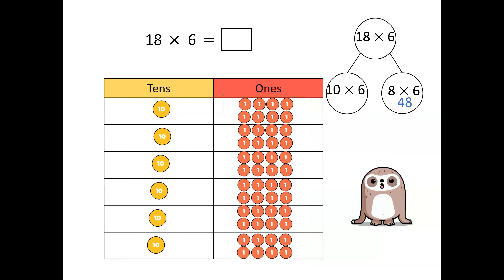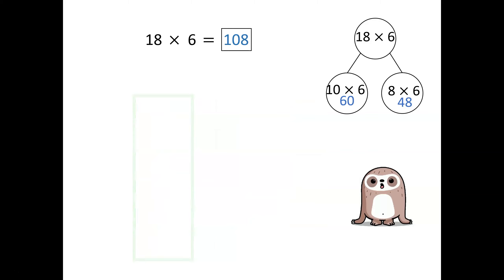Now let's multiply the tens value. Ten multiplied by six is equal to sixty. Looking at our place value table, we can see there are six tens in the table. So altogether we add sixty and forty-eight to give a total of one hundred and eight. Eighteen multiplied by six is one hundred and eight.